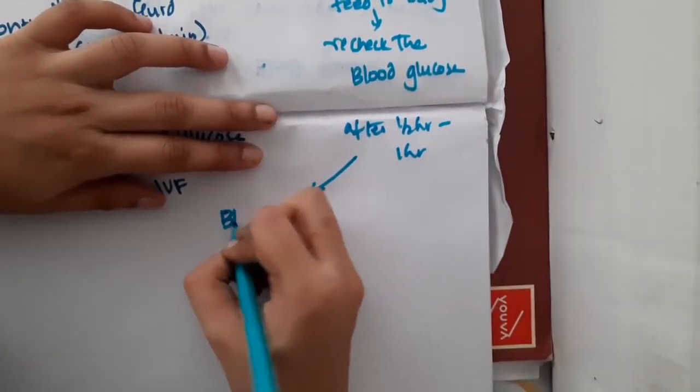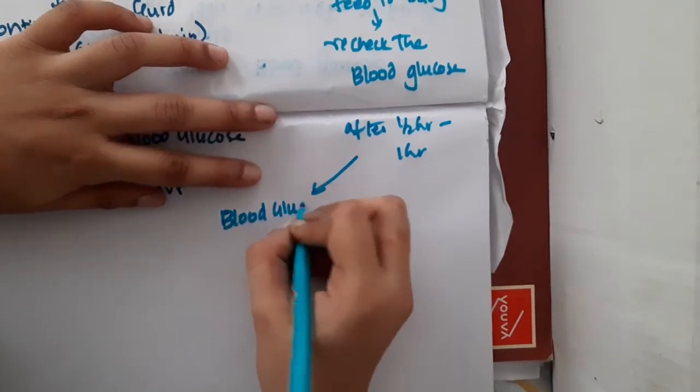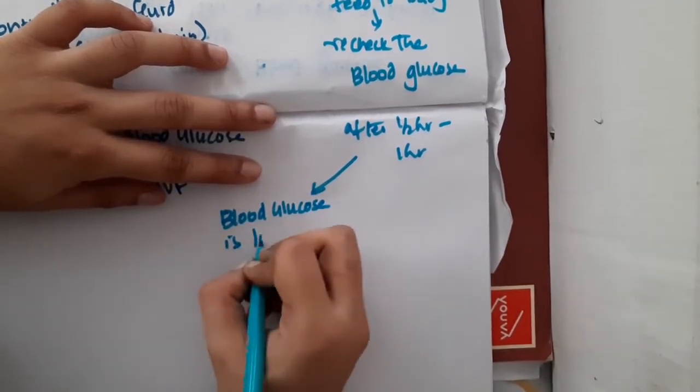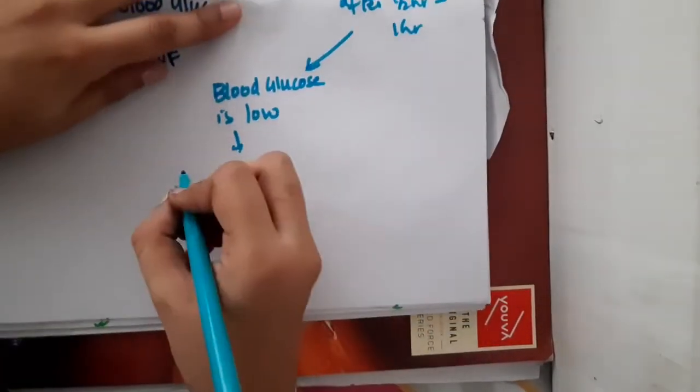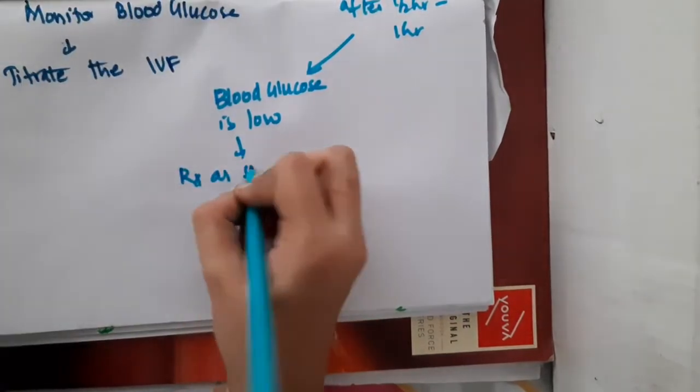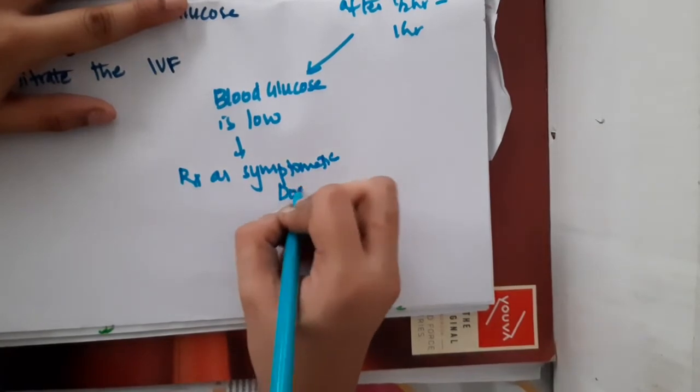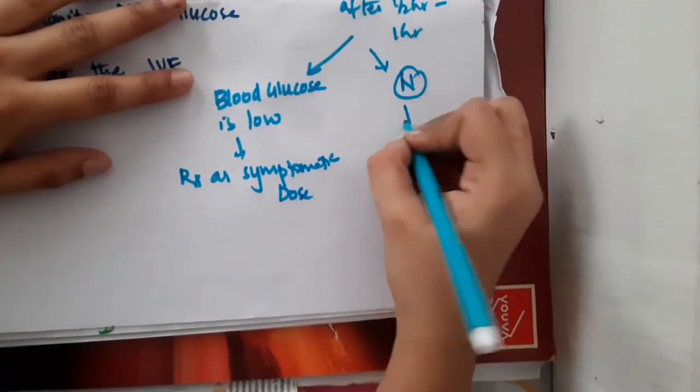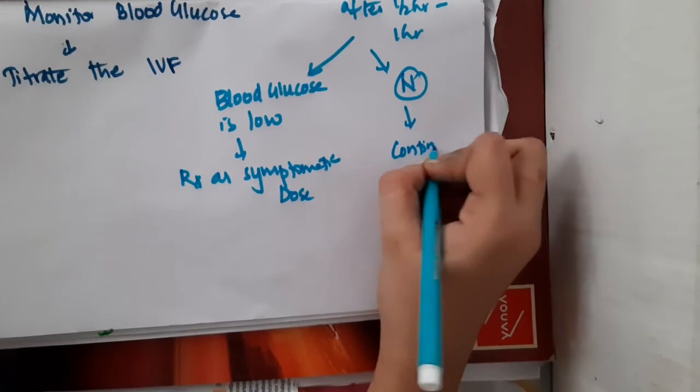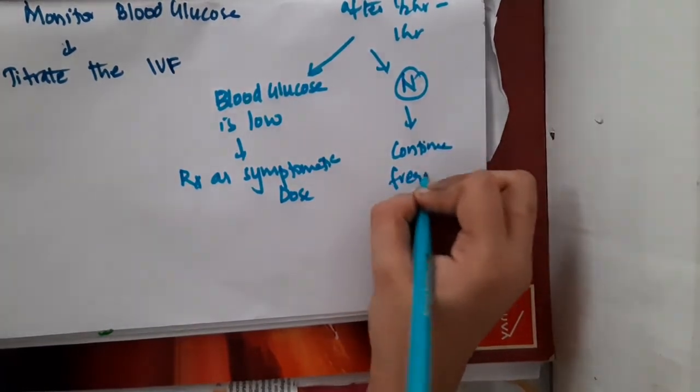After rechecking, if you see that the blood glucose is low, then you should treat as symptomatic dose. But if the blood glucose level is normal, then you should continue frequent feeding.